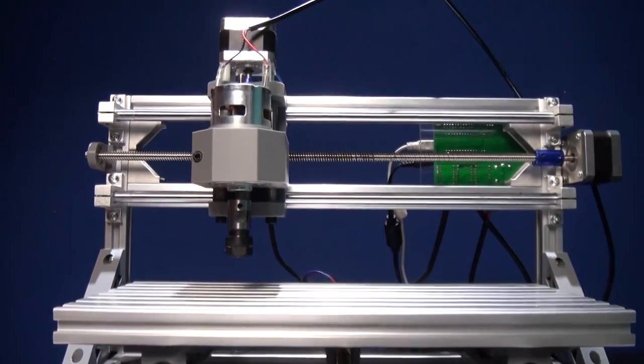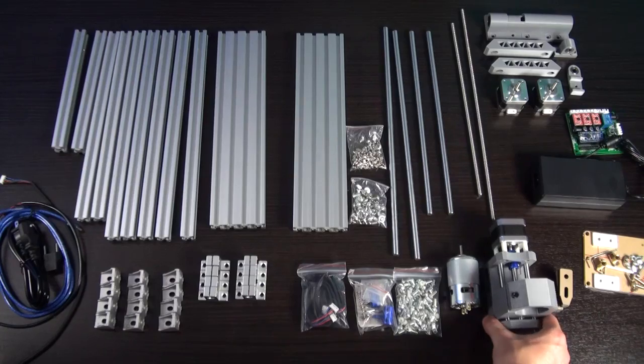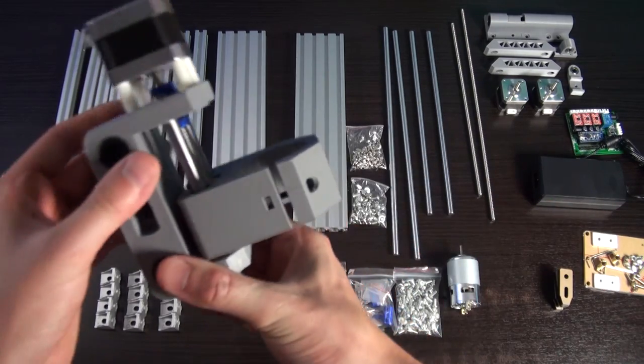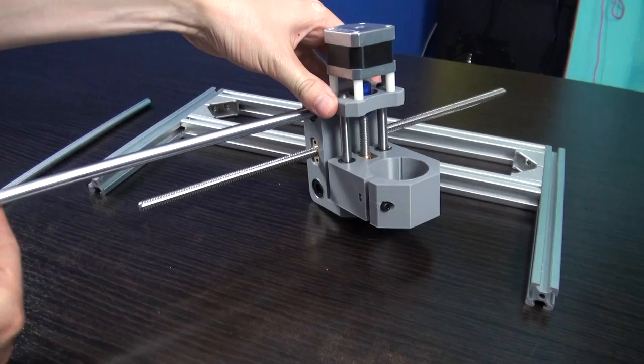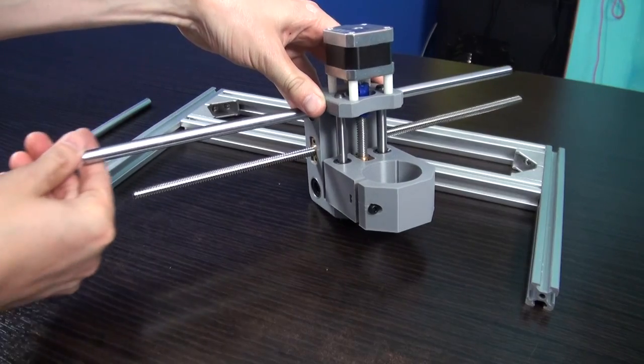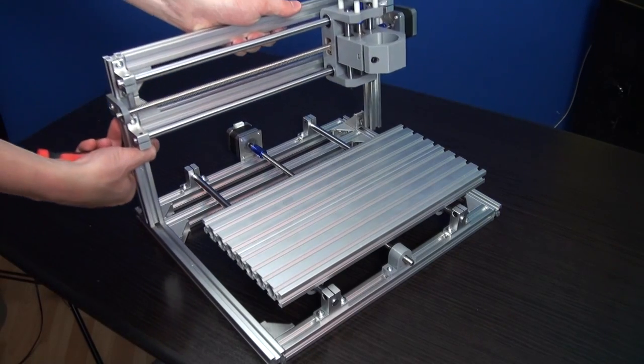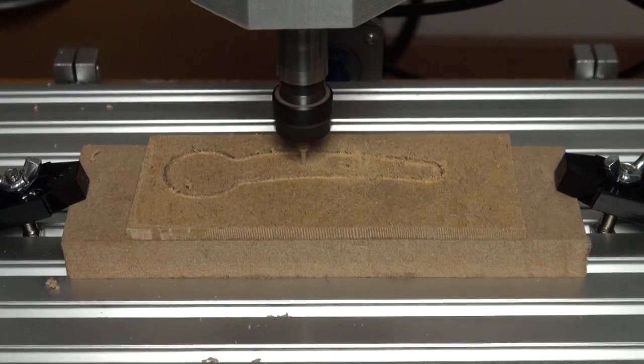This video is about the CNC 3018 router. It's a fun little machine that can be picked up for under $200. In this video I'm going to assemble the machine step-by-step and then test it extensively in wood, plastic and aluminum.